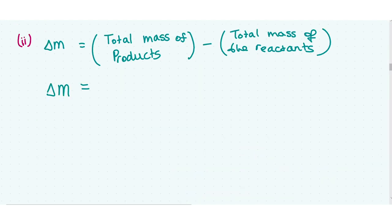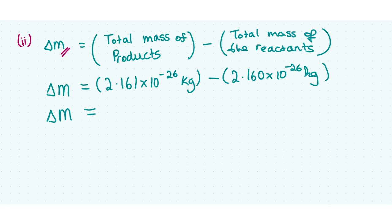The total change in mass here is equal to the total mass of the products minus the total mass of the reactants, because we are looking at a reduction in mass and an increase of kinetic energy. The total mass before this interaction will be greater than the total mass after this reaction. Using the values we calculated previously, we have 2.161 times 10 to the power of minus 26 kilograms minus 2.160 times 10 to the power of minus 26 kilograms. Therefore, our final change in mass gives us 1 times 10 to the power of minus 29 kilograms.